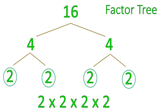So the prime numbers that multiply together to give you 16 are 2 times 2 times 2 times 2. You go ahead and multiply that together. You will get 16. This is what a factor tree is.